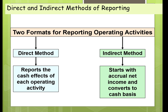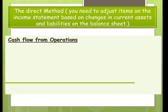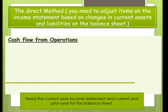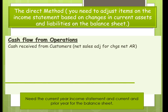Investing and financing are pretty easy, but operations is a little tougher. The direct method reports the cash effects of each operating activity, while the indirect method starts with accrual net income and then converts it to cash by looking at changes in current assets and current liabilities. To do this, you need the current year income statement and the prior plus current year balance sheet.